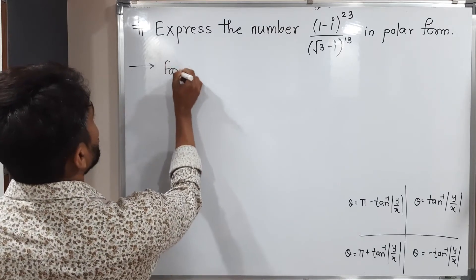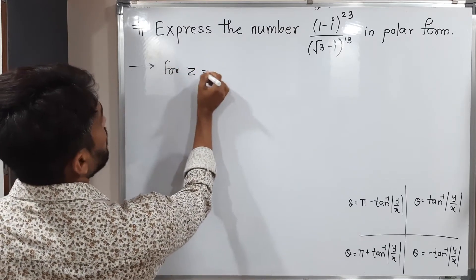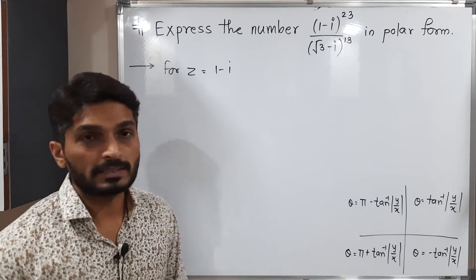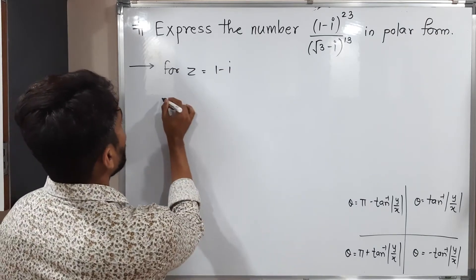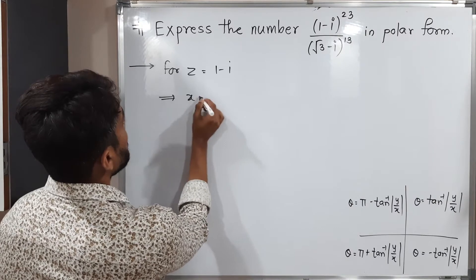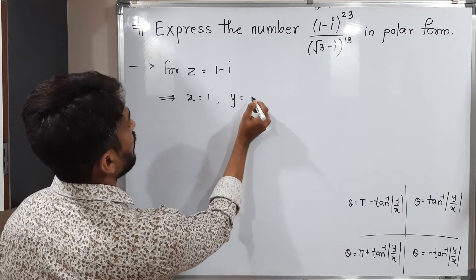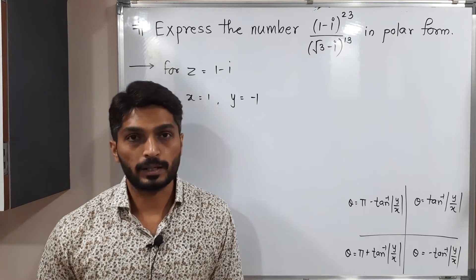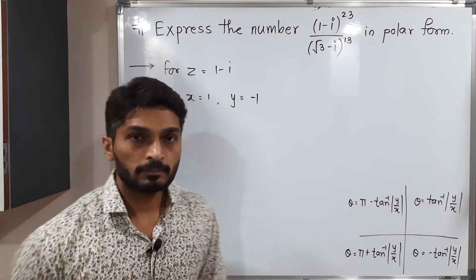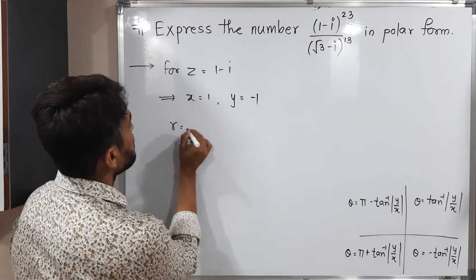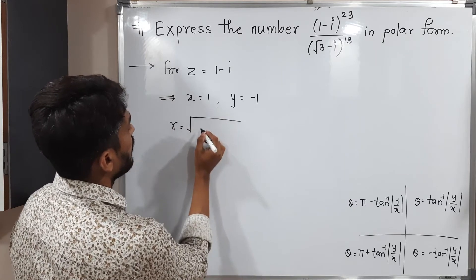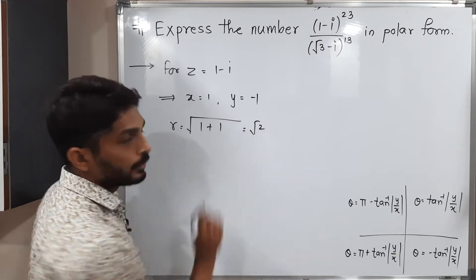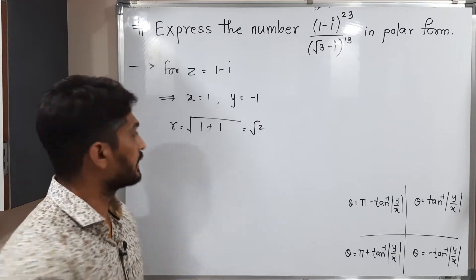For z equal to 1 minus i, consider this complex number. The real part x is equal to 1, and the imaginary part y is equal to minus 1, since the multiple of i is minus 1. The formula of R is square root of x squared plus y squared, so its value is root 2.